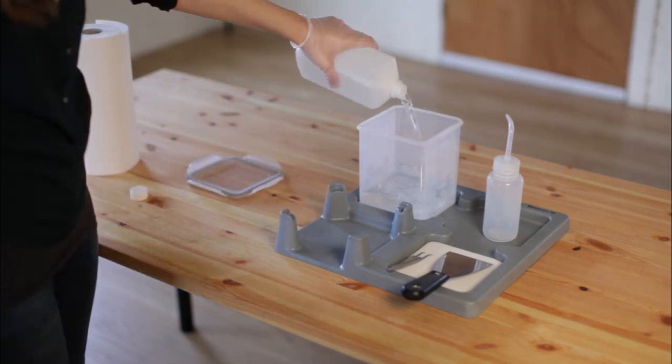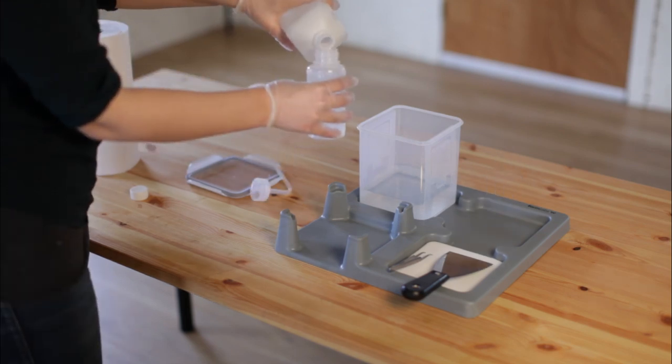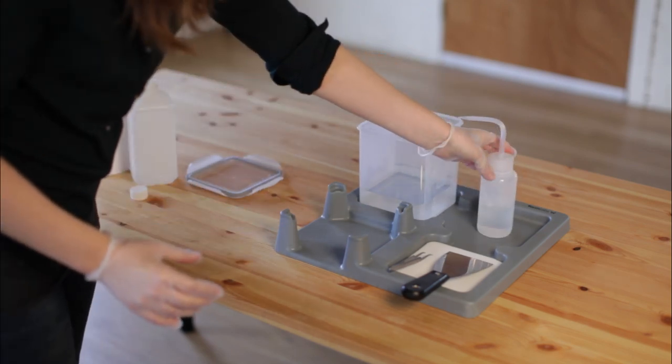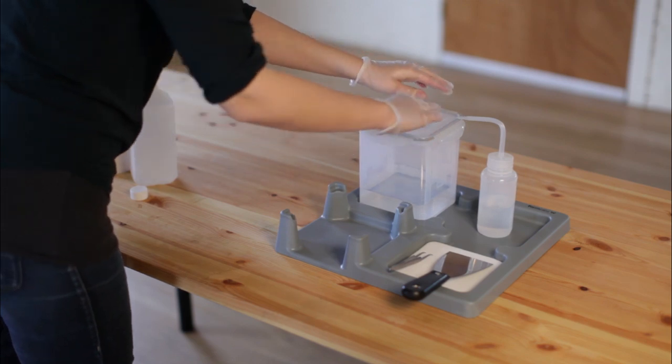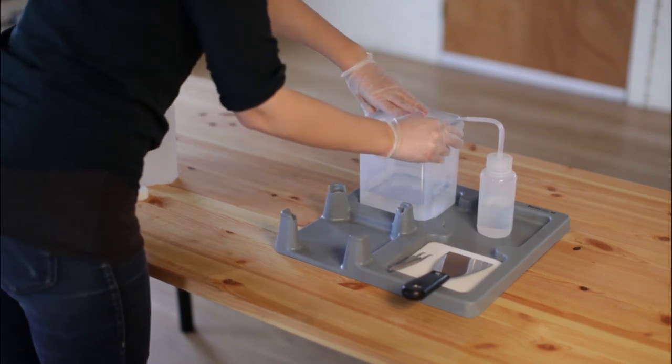Fill the rinse tub about one-third full with isopropyl alcohol. Fill the squeeze bottle also. Store remaining isopropyl alcohol according to manufacturer's instructions.